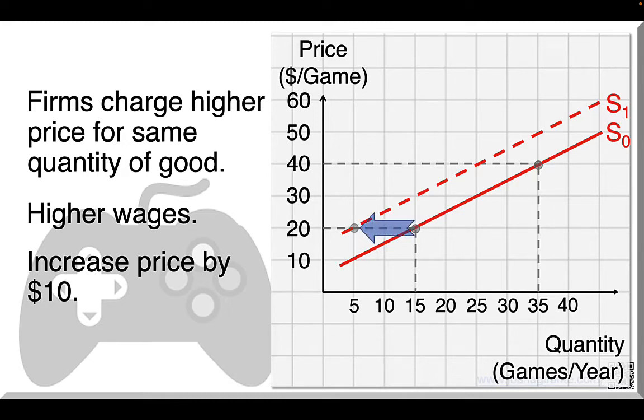Take price $20. The new supply curve shows a quantity supplied that's lower than before wages went up. 5 is lower than 15. Similarly, at price $40, quantity supplied is now 25 games, fewer than the 35 from before. Supply decreased.